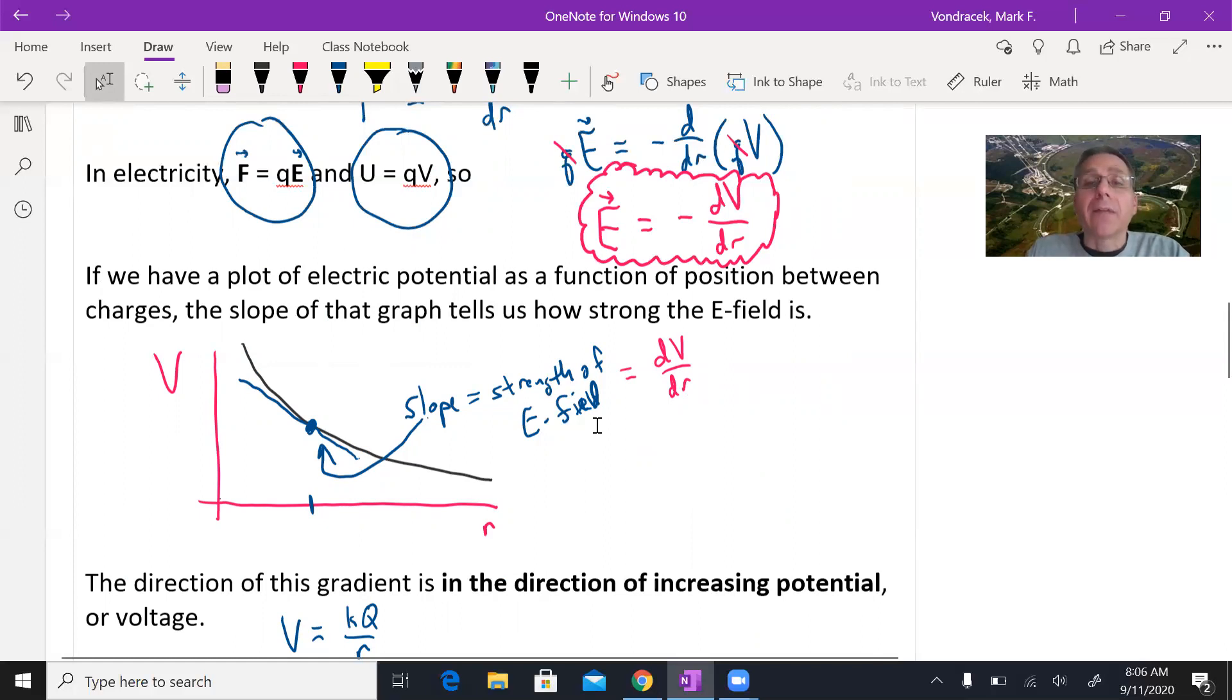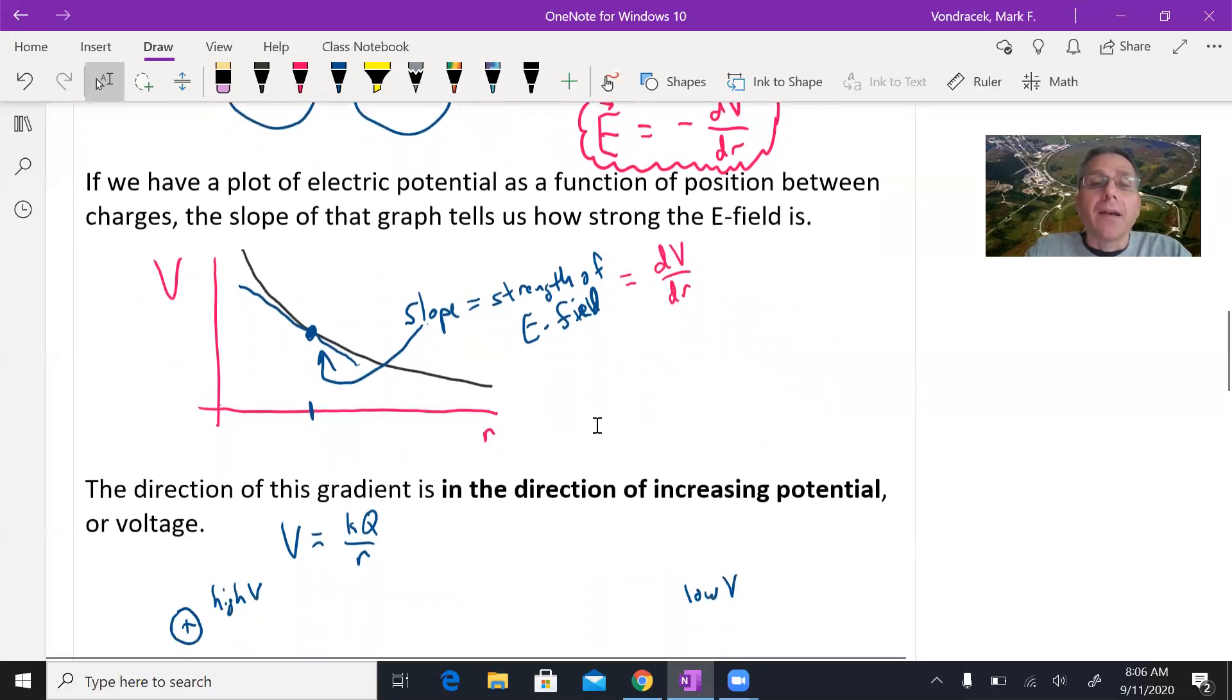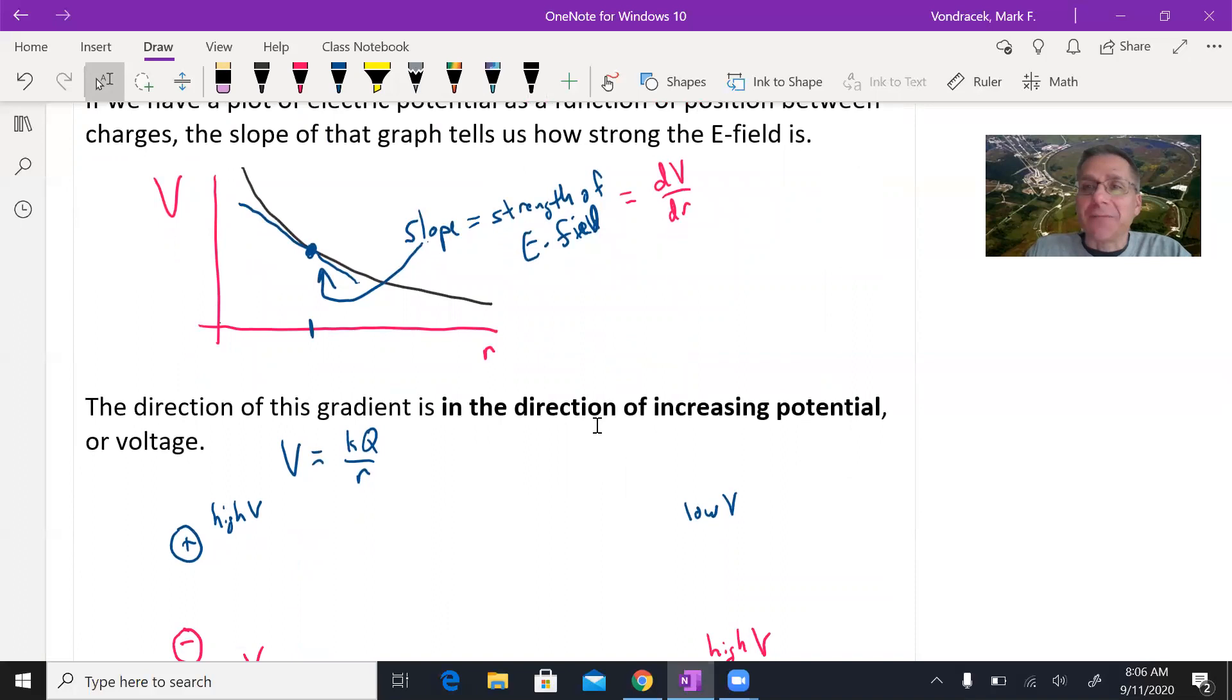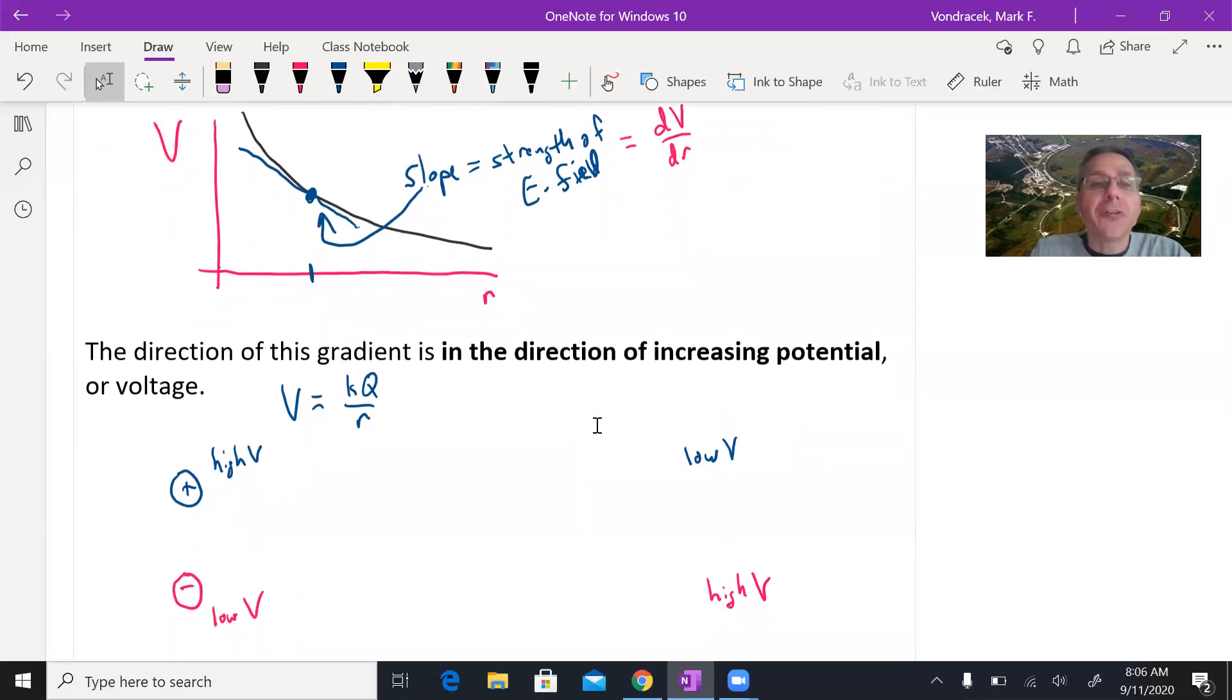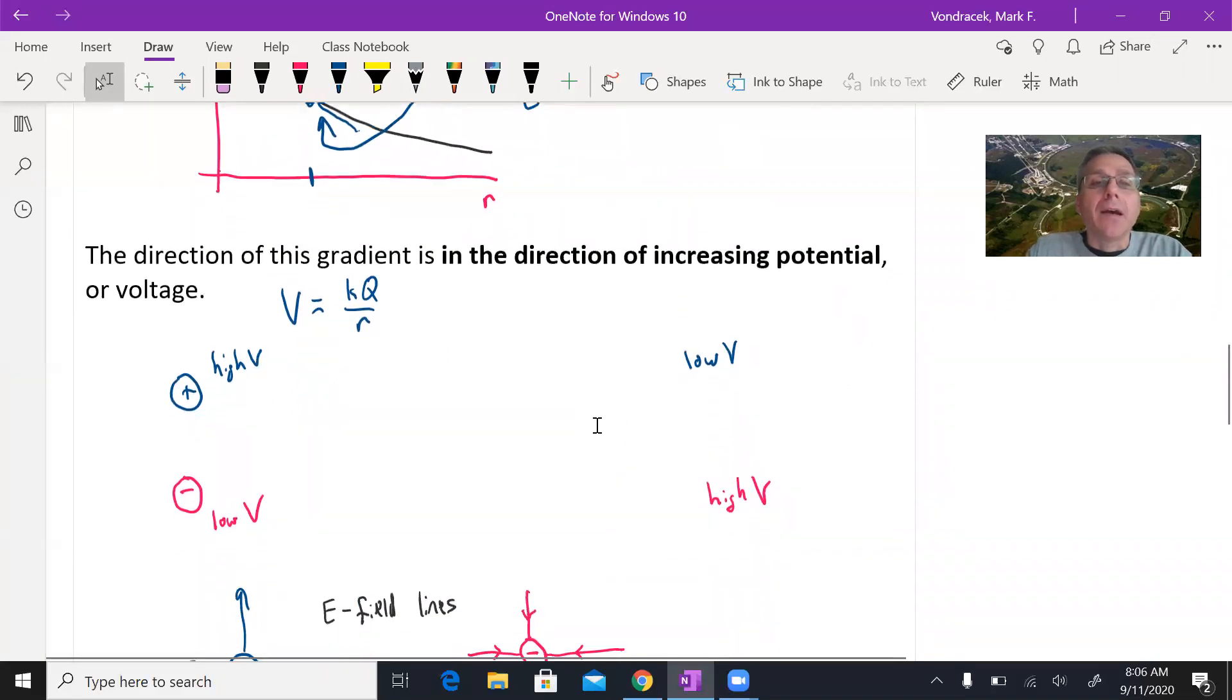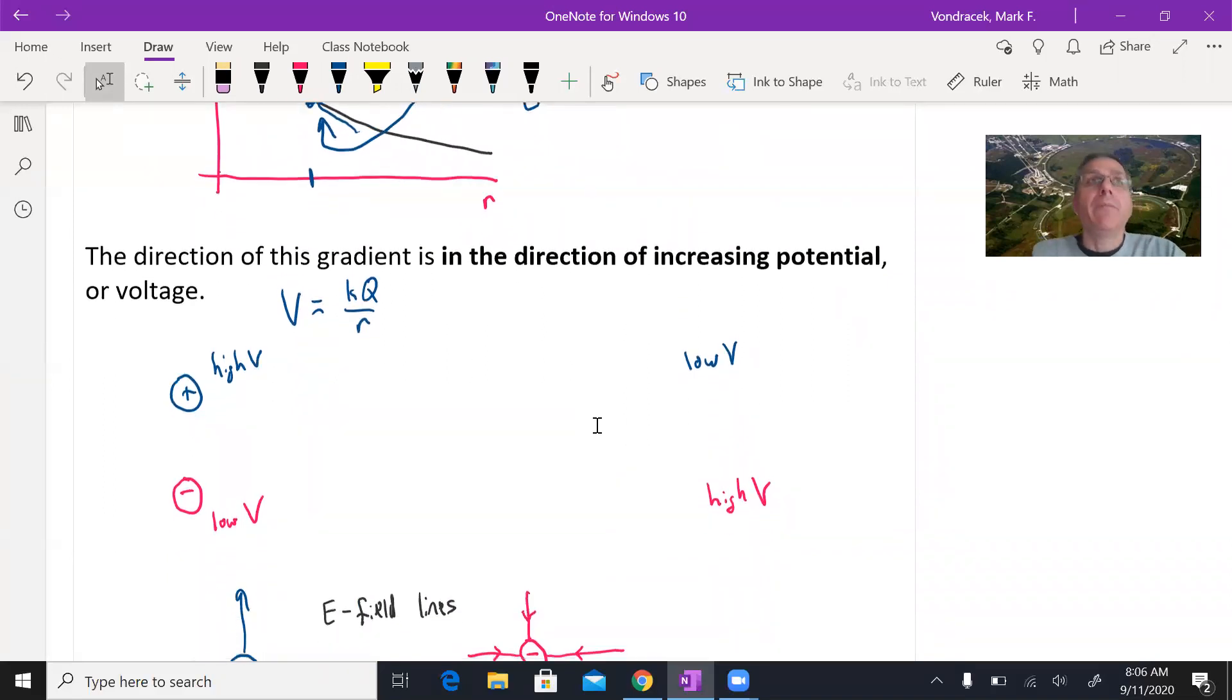What's weird, though, for a lot of people is again, we're relating a vector, something with direction, to a scalar quantity. How do you give a derivative a direction? What does that even mean? So let's see if we can get a little picture in your head to help you out with that. In math, we define the direction of a gradient as in what direction you have to go to increase the quantity. It's the direction of increasing potential in this case.